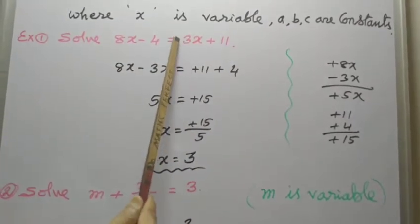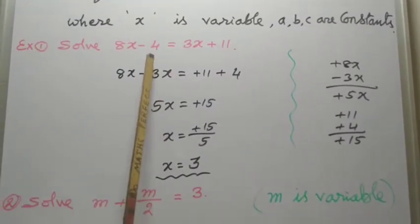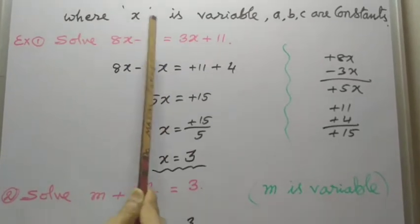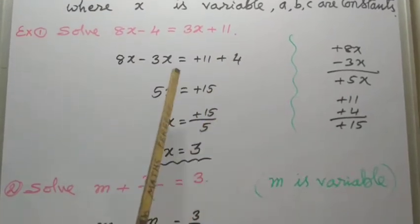For example, this plus 3X changes to minus 3X. Similarly, this minus 4, if we transfer, that means from left-hand side to right-hand side, its sign changes to plus 4.